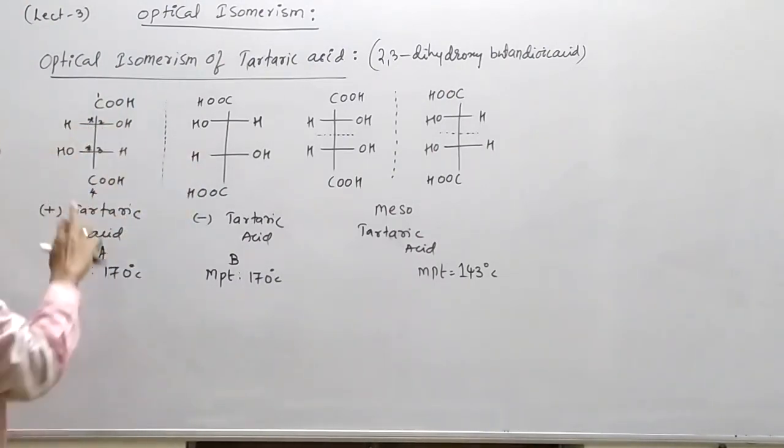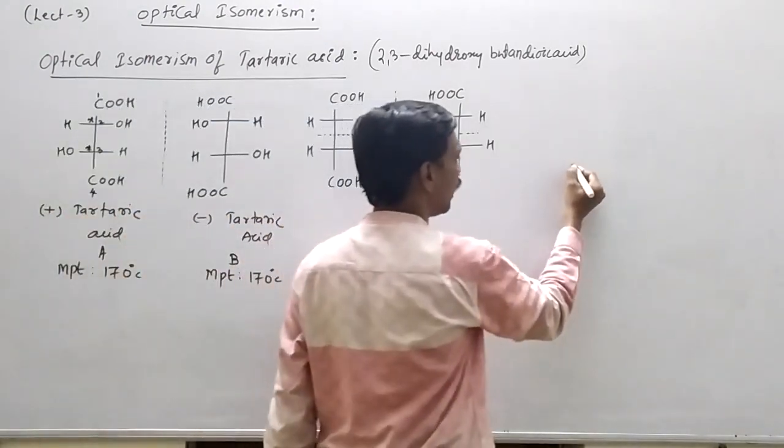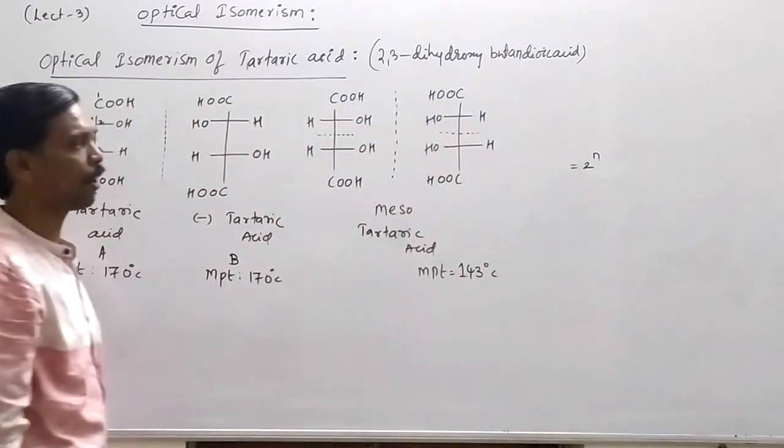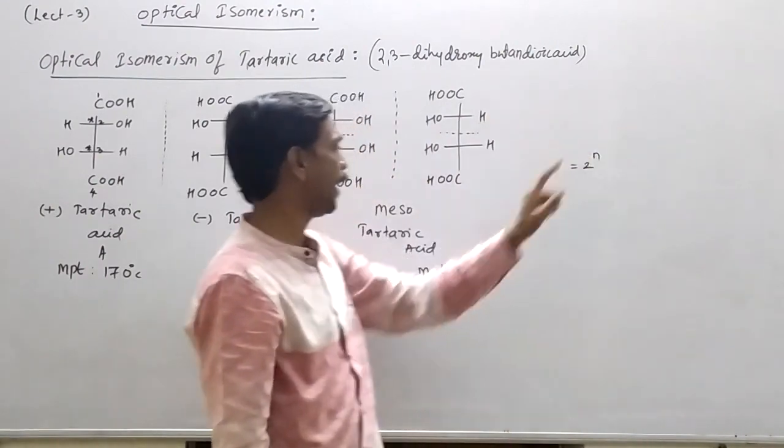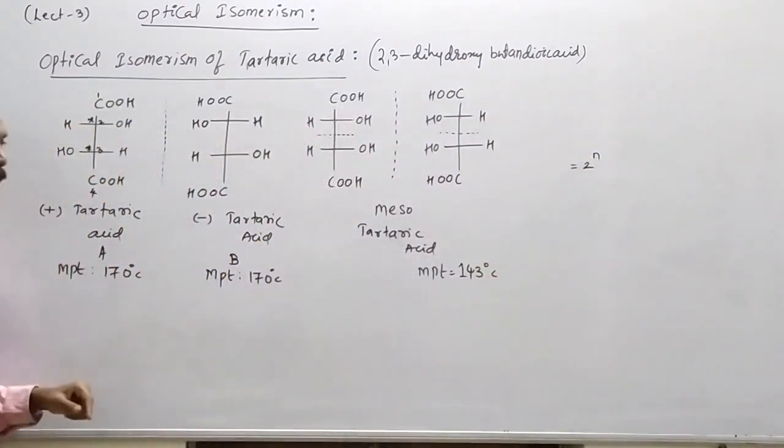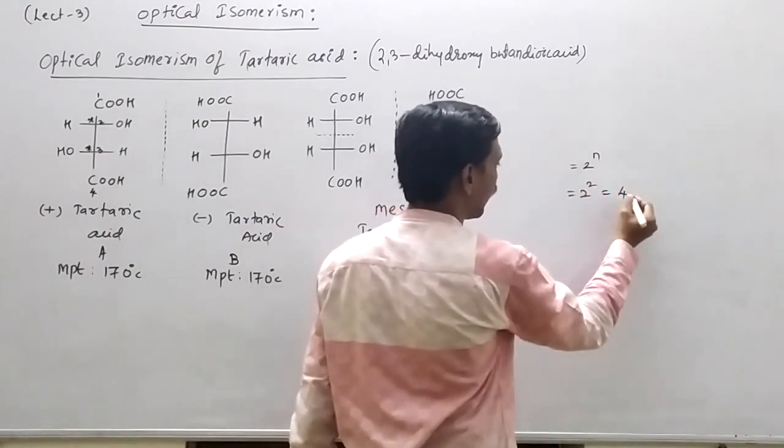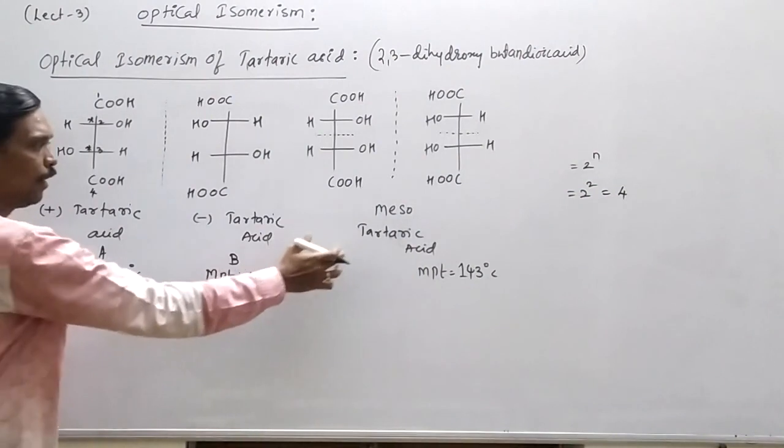So if there are chiral carbons, then optical isomers will come. For that you have to know this principle: total number of optical isomers are equal to 2 to the power n, where n is equal to number of chiral carbons. So here 2 to the power 2, so total number of structures will be four.